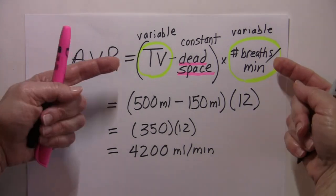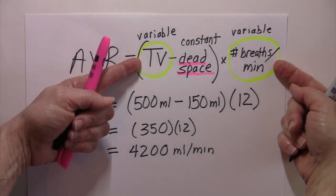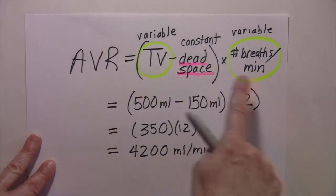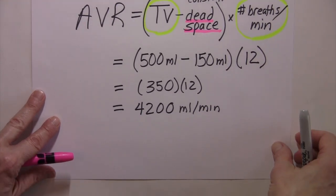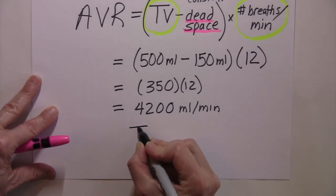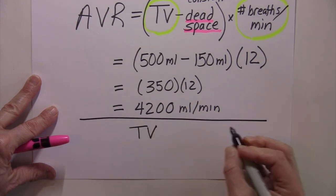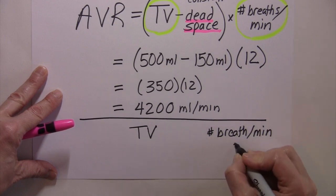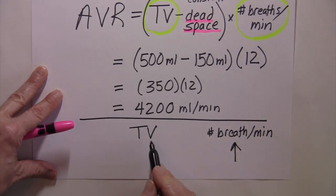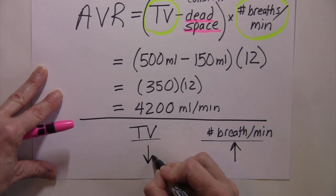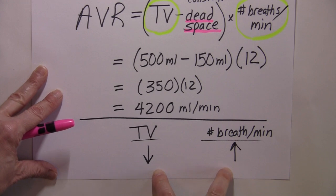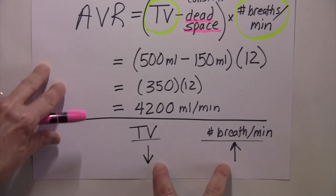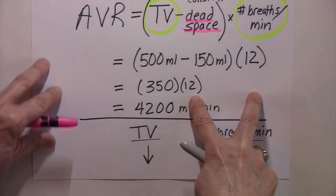And so it might seem like if we increased either of these variables, that that would result in a higher alveolar ventilation rate. But there's an interesting relationship between tidal volume and breaths per minute, which is that if you look at these two factors, if you increase the rate of breathing. So if I started to breathe really quickly, it doesn't give me as much time to bring air into the lungs and my tidal volume will go down. So there's an inverse relationship between these two variables. So if I start breathing faster, I can't bring as much air in.